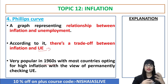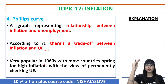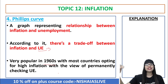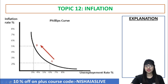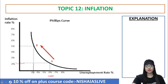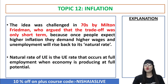Since 1960, this term was very popular in many countries, with most countries opting for high inflation with the view of permanently checking unemployment. We know that when there is too much unemployment, people will not get money, living standards decrease, GDP per capita decreases, impacting growth and development. In the Phillips Curve, when unemployment is 3%, inflation is 5%; when unemployment increases to 4%, inflation reduces to 4%; when unemployment is 6%, inflation reduces to 2%. They have an inverse relationship — not directly related. This was put forward by economist A.W. Phillips.